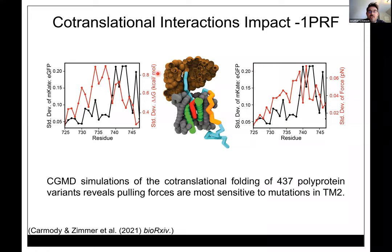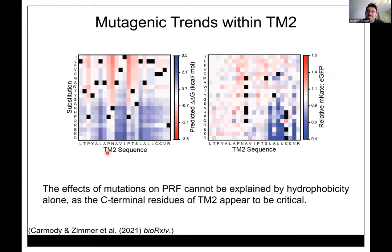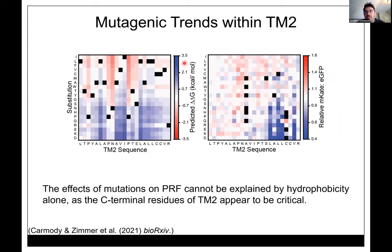There's something going on in the translocon — some structural contact affecting things — that you don't get from thermodynamic estimates but do get from Tom Miller's coarse-grained simulations. Standard deviation of ΔlnG shows that mutations in the center of the helix are most sensitive thermodynamically, but our frameshifting sensitivity — shown in black — shows a disconnect between thermodynamics and observed frameshifting. Tom ran coarse-grained simulations on all ~440 mutations in this helix: just like our frameshifting data, the C-terminal residues are most sensitive in terms of pulling force.